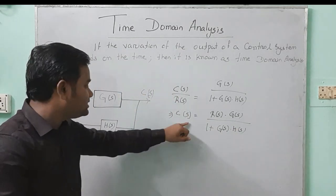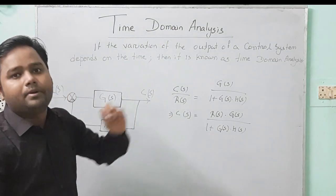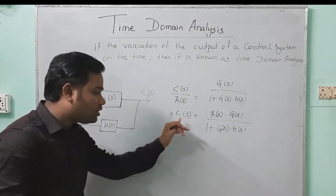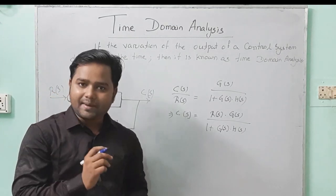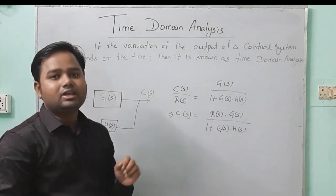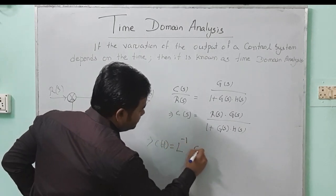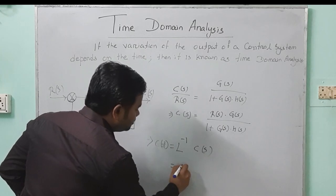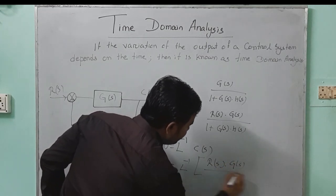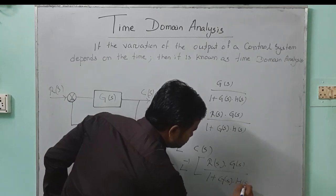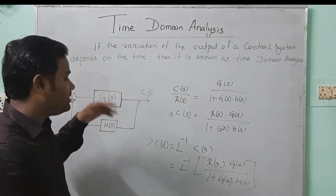The output C of S depends upon frequency. But here we will study the time domain analysis, meaning the output has to depend upon the time domain. That's why we have to convert the frequency domain into time domain using inverse Laplace transformation. So C of T is equal to the inverse Laplace of R of S into G of S whole divided by 1 plus G of S into H of S. This is the basic formula to convert a transfer function from frequency domain to time domain.